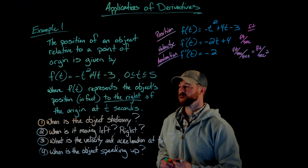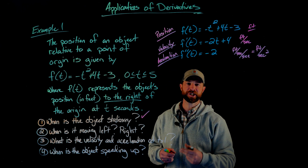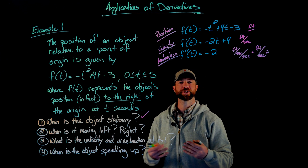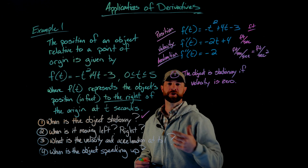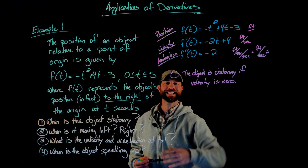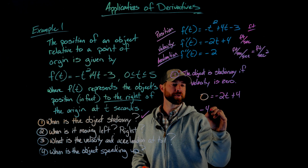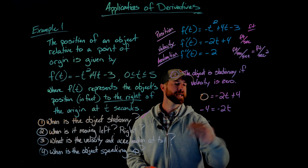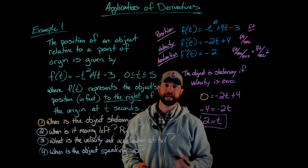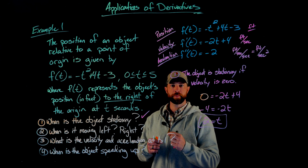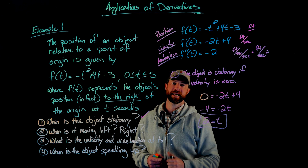For number one, the question is: when is the object stationary? The object is stationary at any instance when the velocity is equal to zero. So we simply need to take the velocity function, which is the first derivative, set it equal to zero, and solve. Subtracting 4 from both sides gives negative 4 equals negative 2t, then dividing by negative 2 gives t equals 2. So the object is momentarily stationary at 2 seconds.